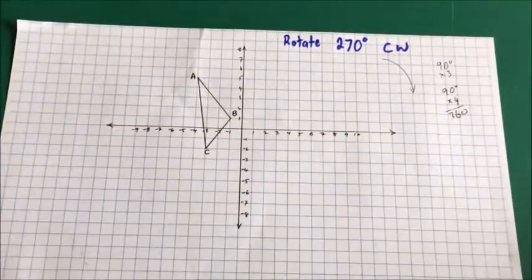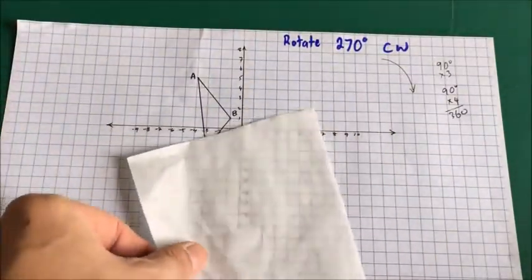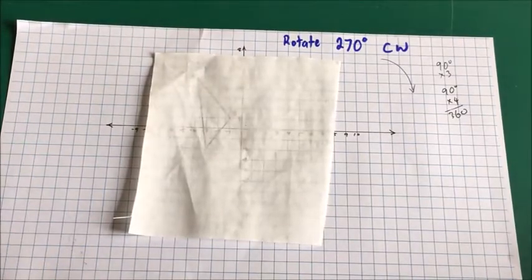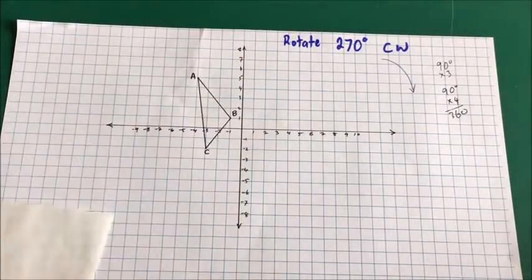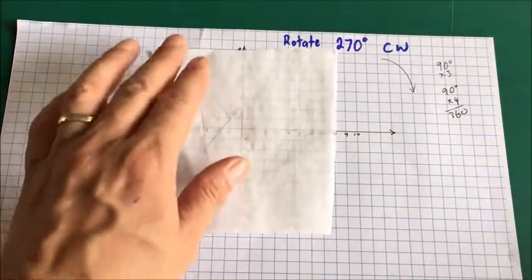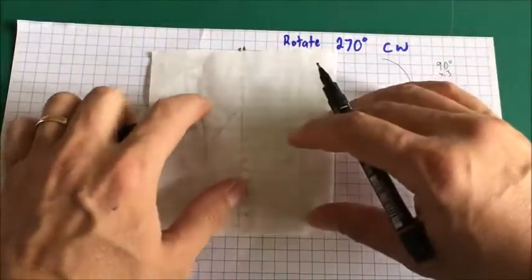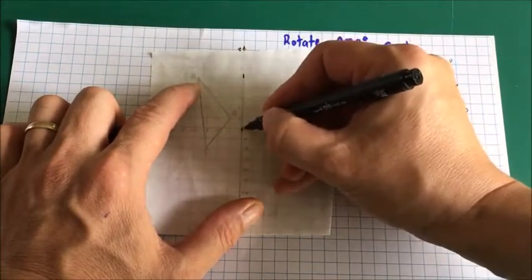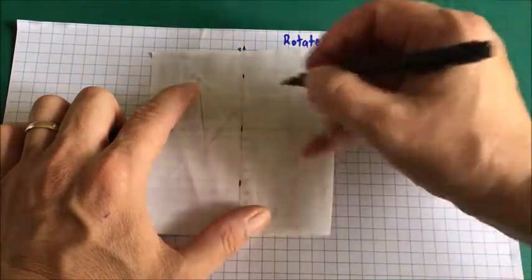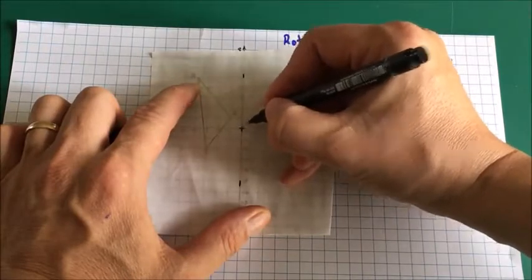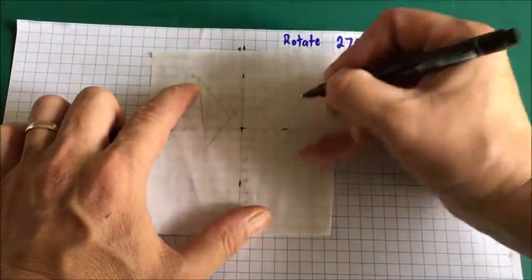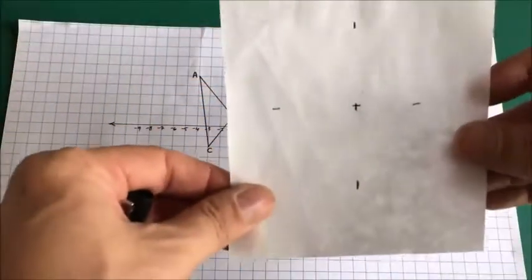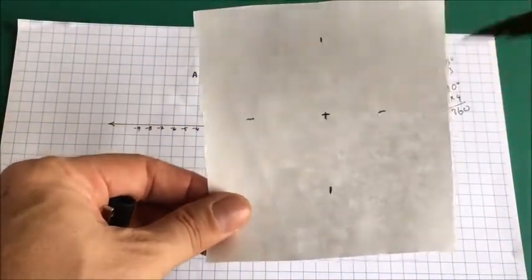I'm going to go all the way clockwise. First thing I need is some tracing paper, and what I need to do with my tracing paper is create the axes, because that will make my job a lot easier. I'll do that by hand quickly - it doesn't need to be fancy. I'll do the crosshairs here at 0,0 and mark some reference points.